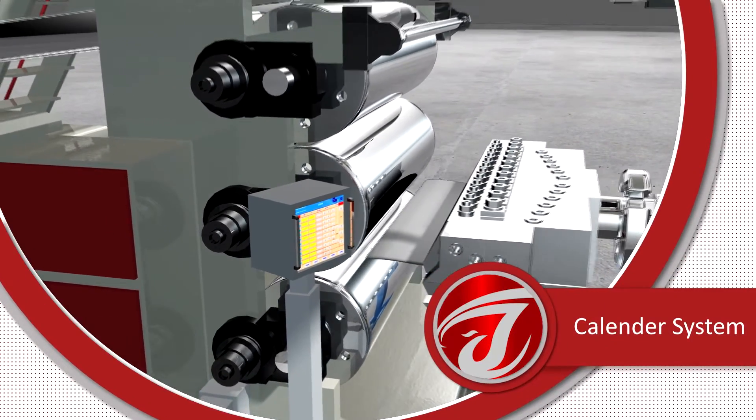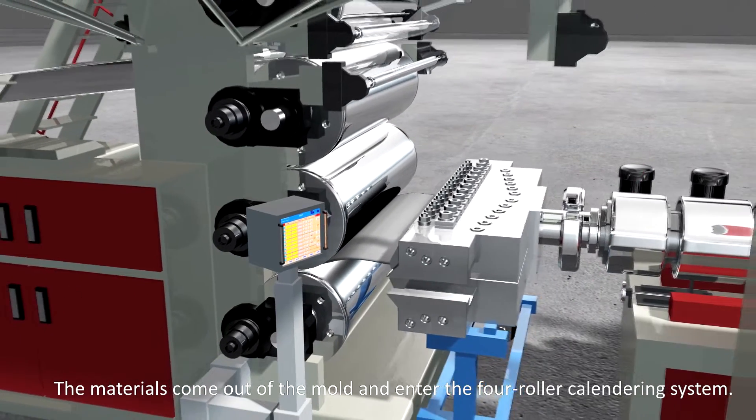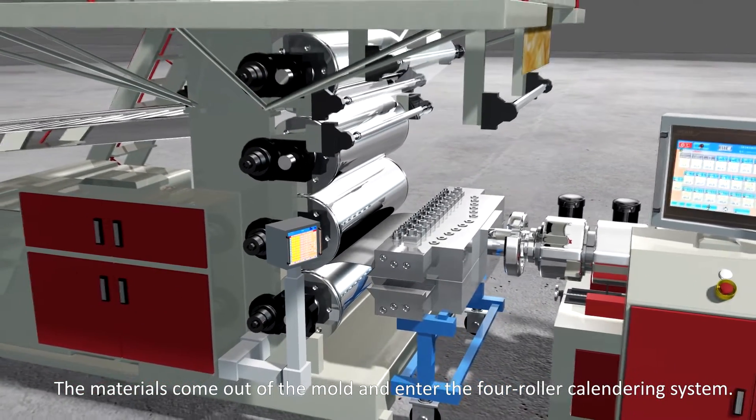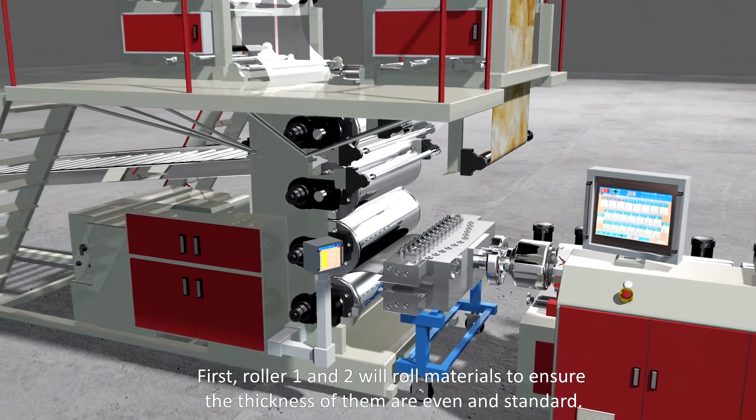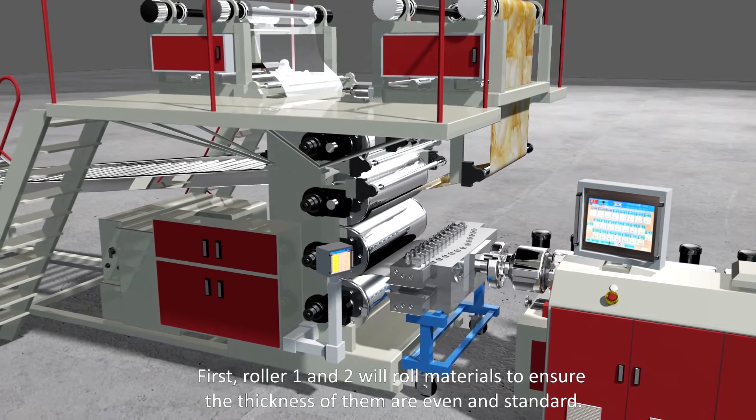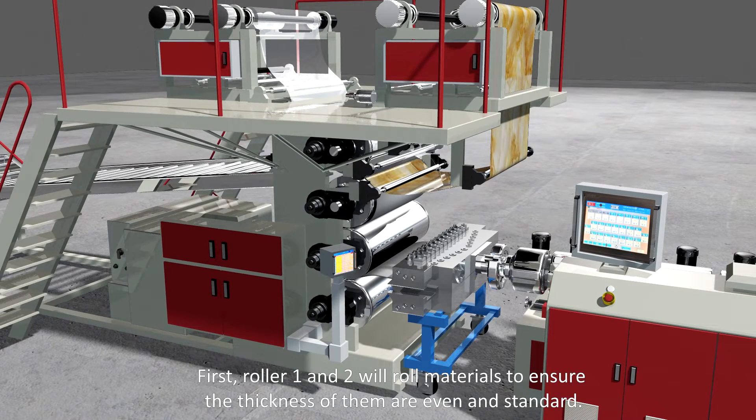Calendering system. The materials come out of the mold and enter the four-roller calendering system. Roll materials to ensure the thickness is even and standard.